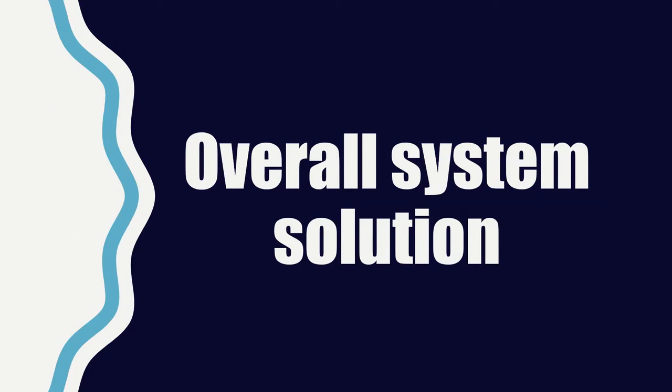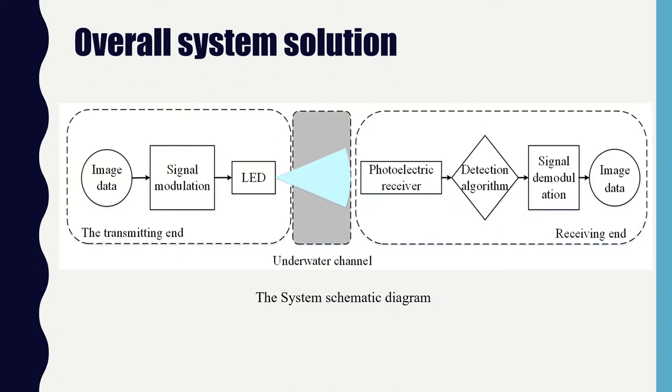The second part is the system design principle and scheme. The underwater image transmission system is mainly composed of three parts: transmitter, underwater channel, and receiver, as shown in this figure.